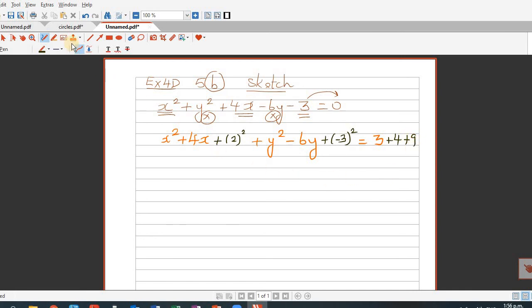This becomes x plus 2 the whole squared plus y minus 3 the whole squared is equal to 16 - three plus four is seven plus nine is 16 which is 4 squared. Writing in the center radius form, this is x minus minus 2 squared plus y minus 3 squared is equal to 4 squared.